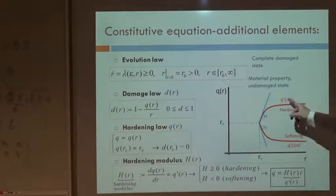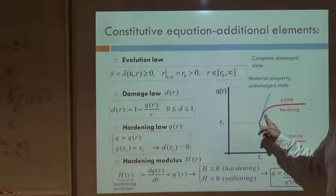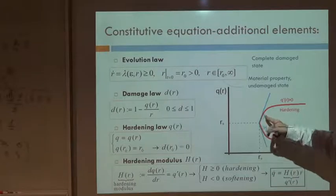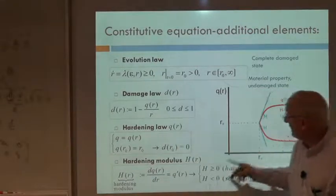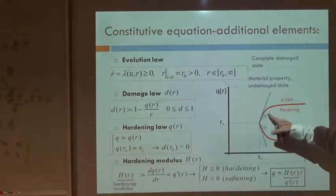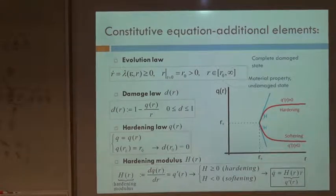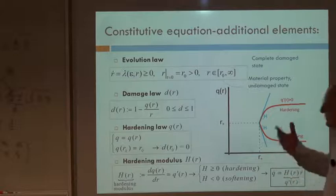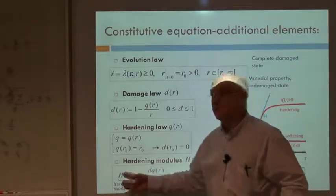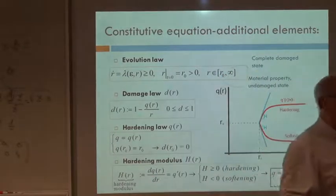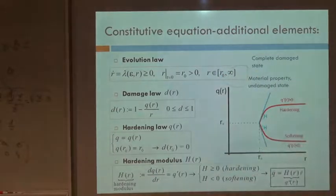There is a relation of Q and R — that is a material property. That law is characterized by H. If I know H, I know the law. So H is what characterizes it — it's a material property. The hardening-softening modulus is normally a material property of the material.